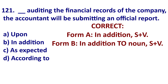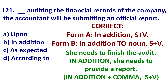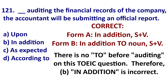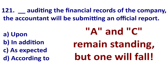Next, eliminate B — 'in addition.' When you use 'in addition,' the structure is: in addition comma subject verb, or in addition to now comma subject verb. Example: she needs to finish the audit; in addition, she needs to provide a report. Or: in addition to finishing the audit, she needs to provide a report. There is no 'to' before 'auditing' in the question, so this cannot be the answer.